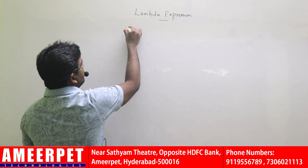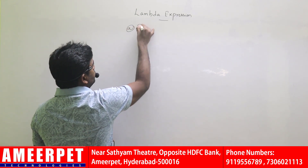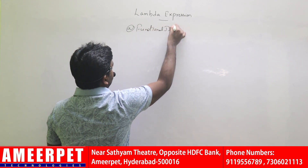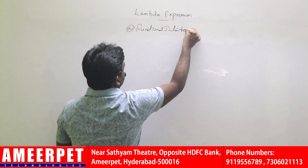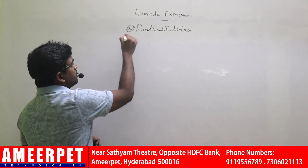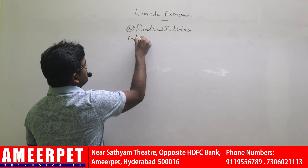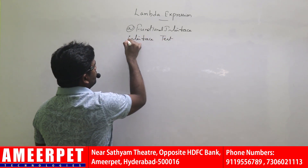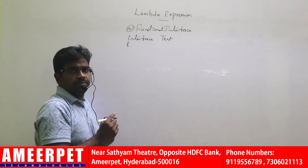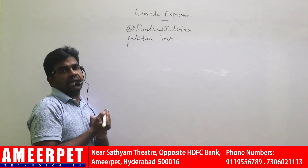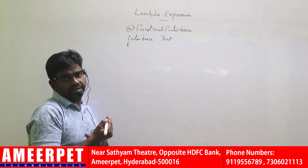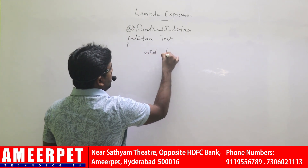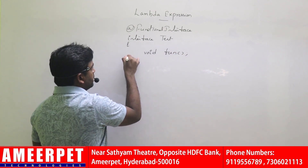Here, we are writing one functional interface using the @FunctionalInterface annotation. We are writing that interface named Test, which contains only one abstract method — only one specification. Of course, any number of static and default methods we can define. Here, I am defining one method called void fun().